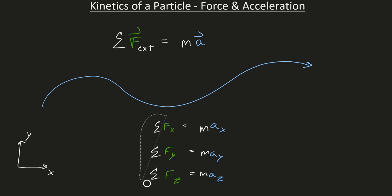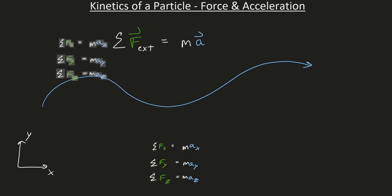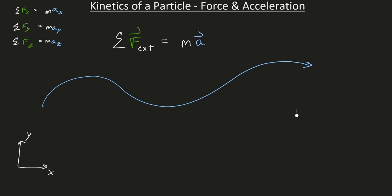So this is how we would do it if we were analyzing the motion of a particle using rectilinear coordinates, x, y, and z coordinates. But as we've learned, we can analyze the motion of a particle using different coordinate systems.